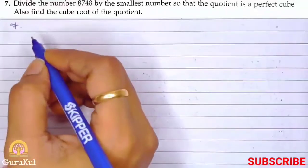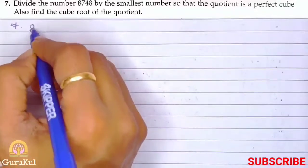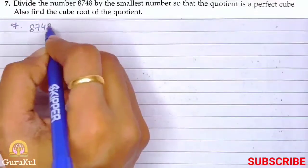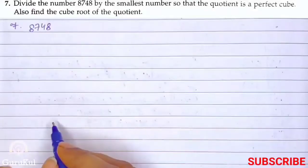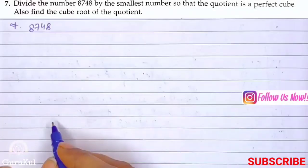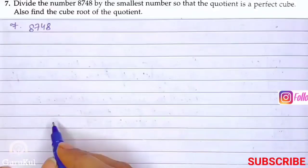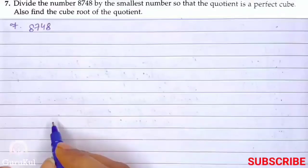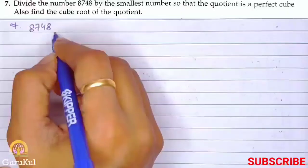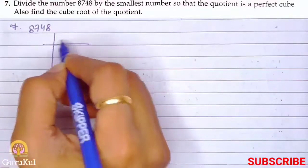Question number 7: Divide the number 8748 by the smallest number so that the quotient is a perfect cube and also find the cube root of the quotient. Question 6 was multiply and here is divide, so let us begin with prime factorization.